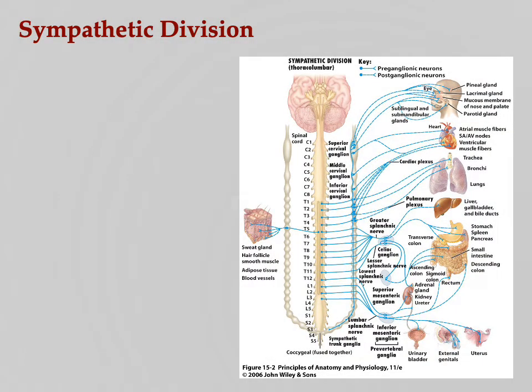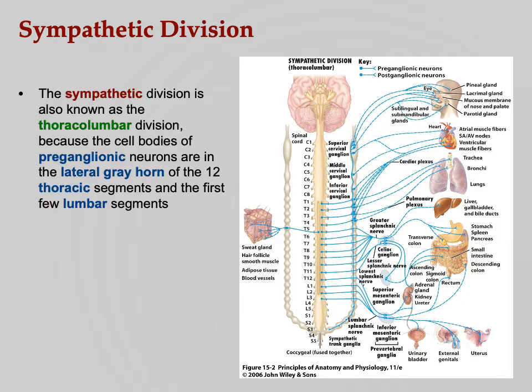We've distinguished sympathetic and parasympathetic, and talked about how we have dual innervation to all of our organs except the adrenal gland. Now let's start focusing in on the differences between them.